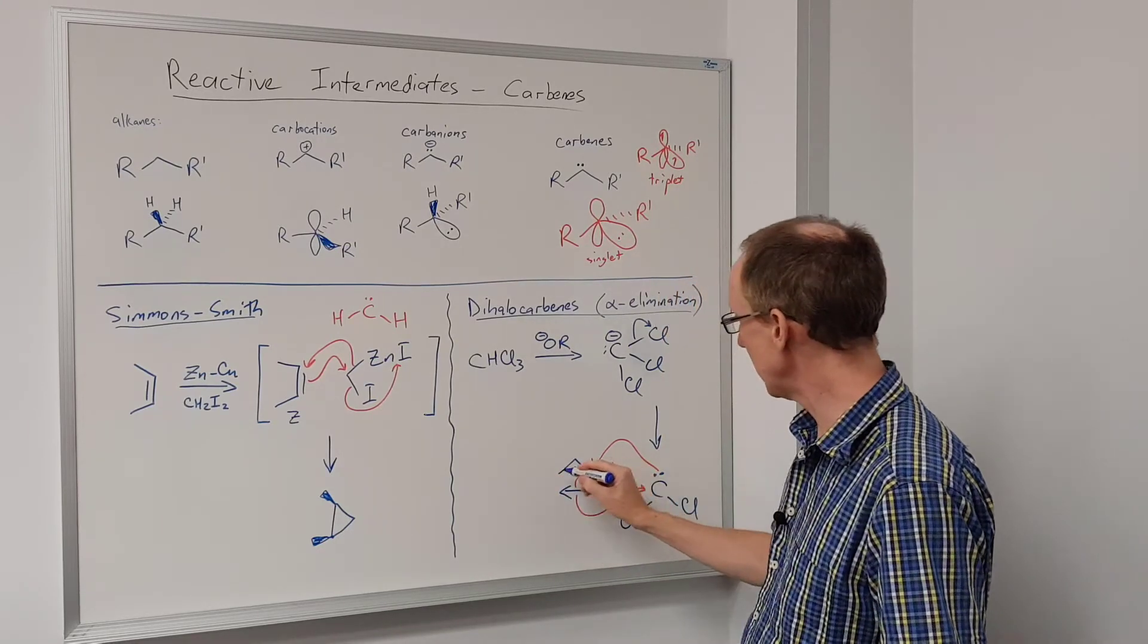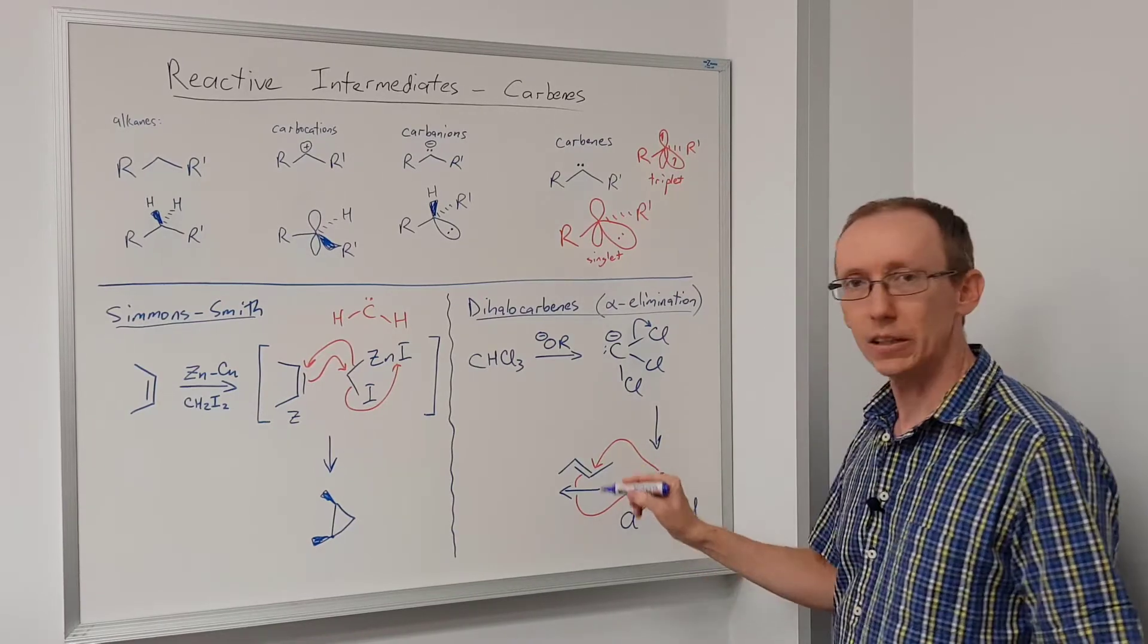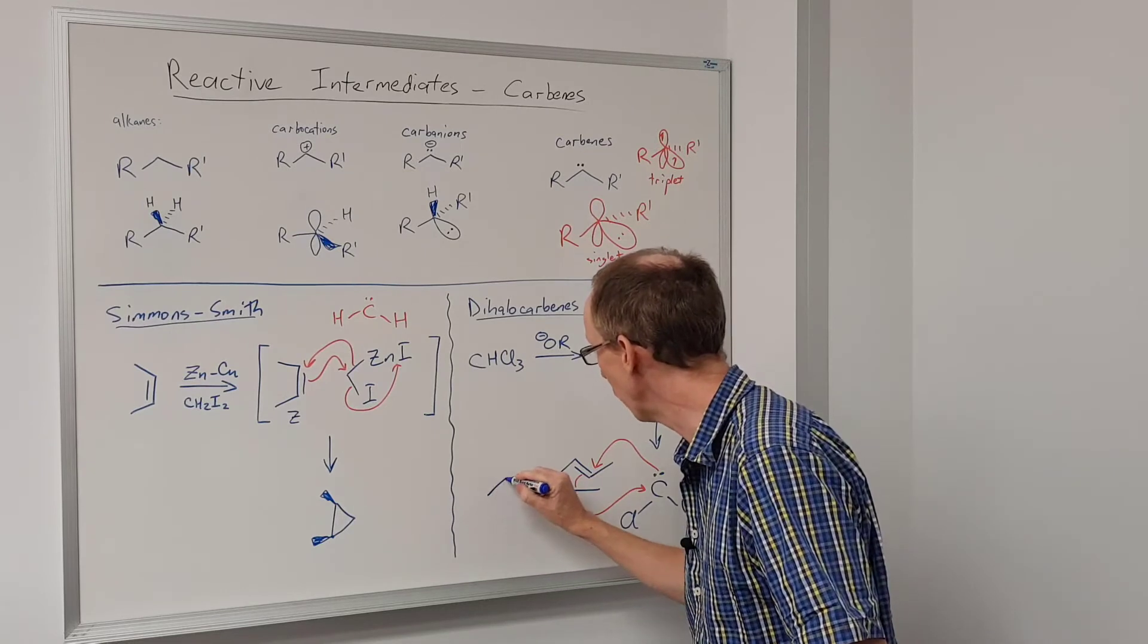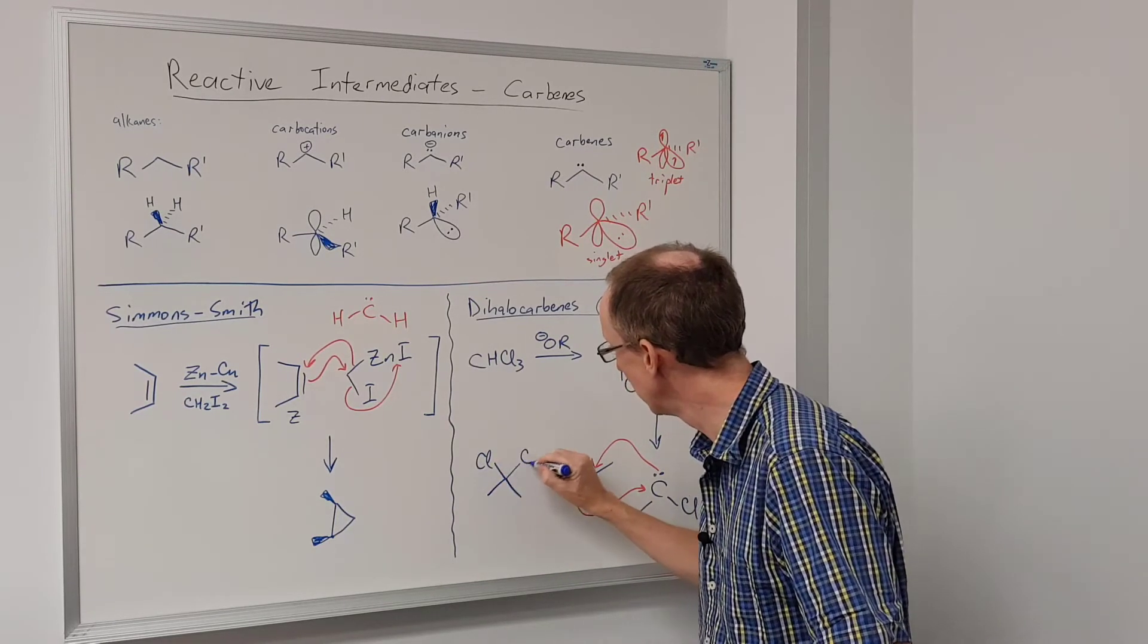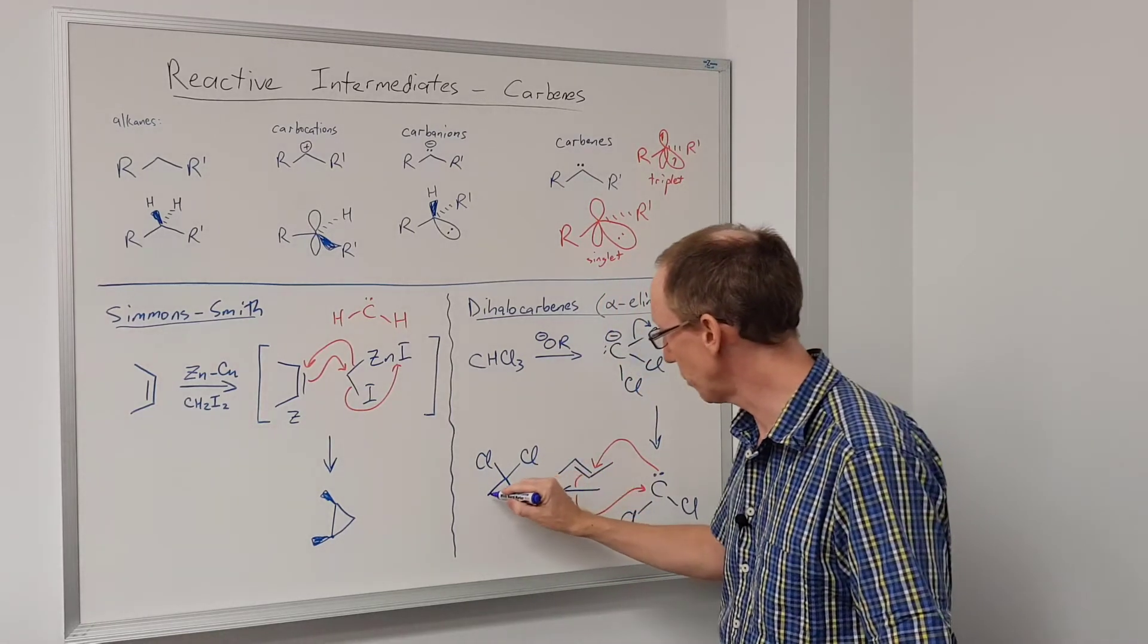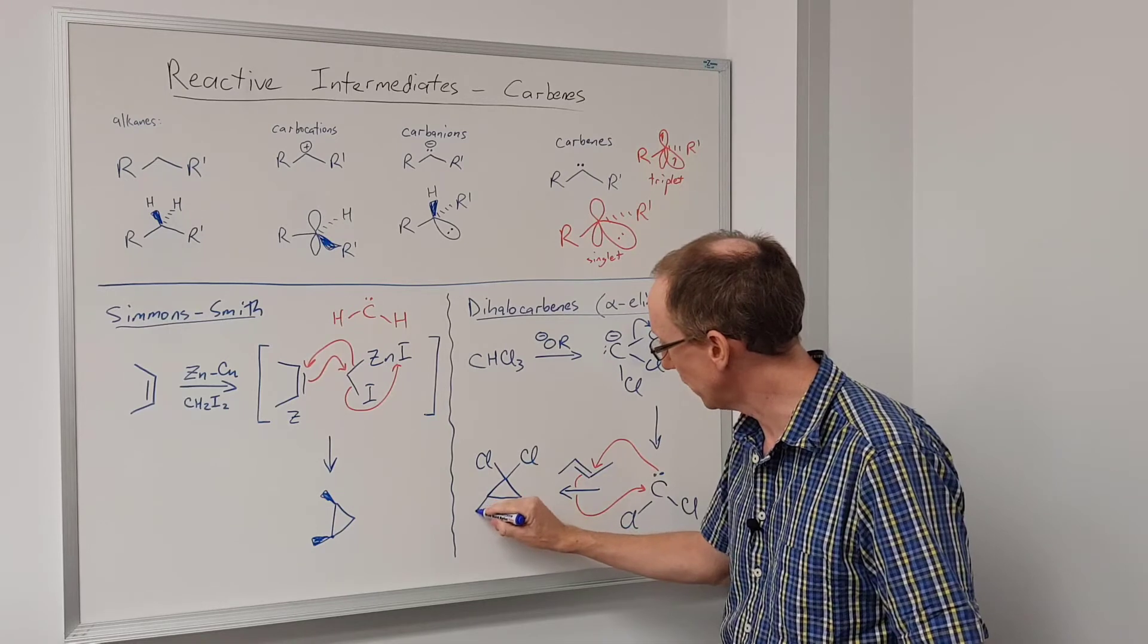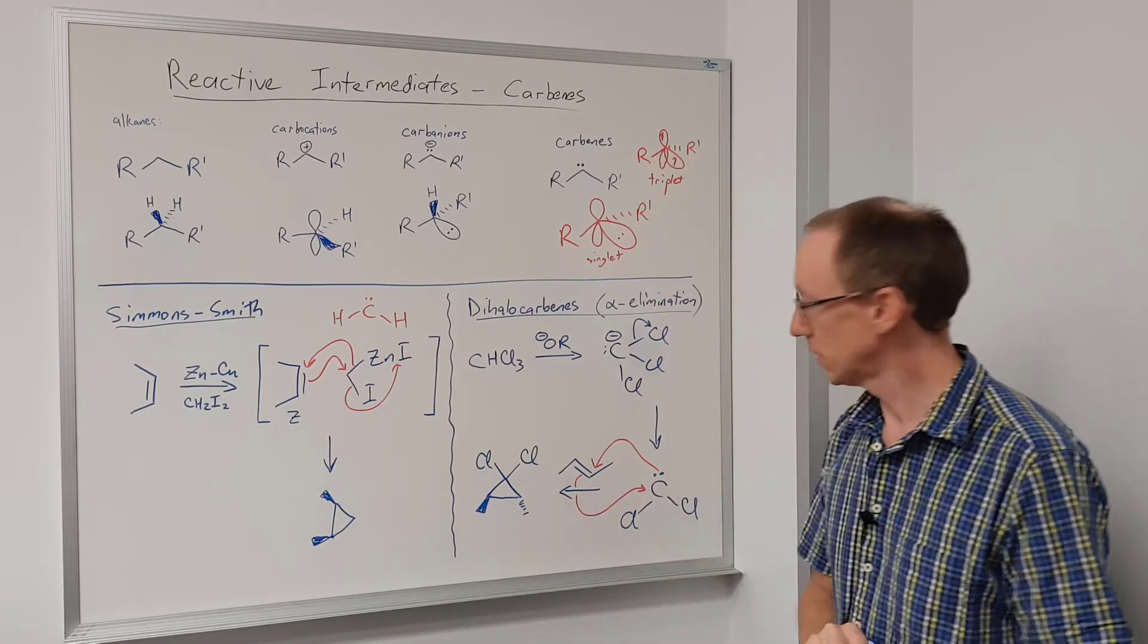Now, if this is the trans double bond, or the E double bond reacting, then the cyclopropane is now going to be trans-substituted cyclopropane. So we're going to end up with a species with two chlorines, one carbon of the cyclopropane, and then those two methyl groups are going to be trans to one another.